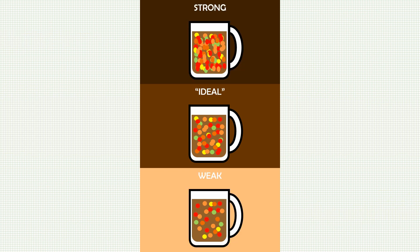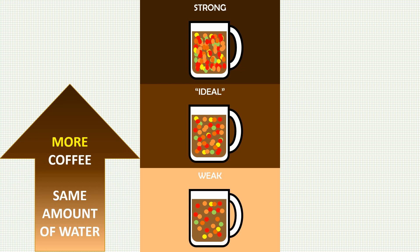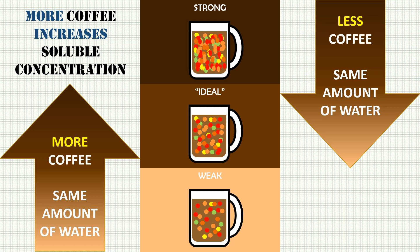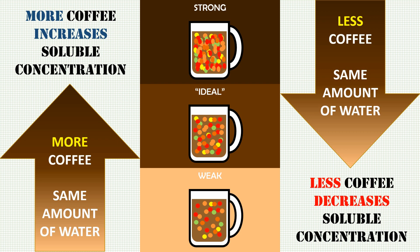To manage concentration: if your current coffee is weak, add more coffee while keeping the same amount of water. More coffee will increase the solubles concentration, so your flavor will stay the same but be more prominent. Conversely, if your current coffee is too strong, use less coffee with the same amount of water. Less coffee decreases the solubles concentration and keeps the same flavor profile, just in a less strong version.